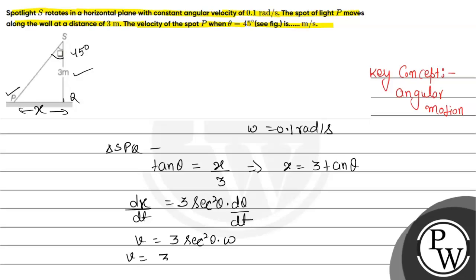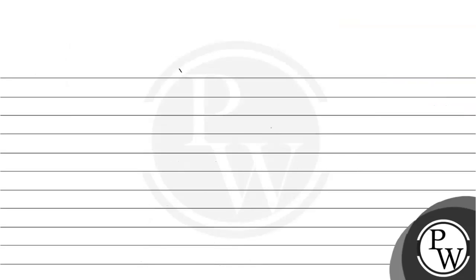If we find the value in this particular case, the value is theta equals 45 degrees. So it will be 3 sec squared 45 degrees into omega, which is 0.1 radian per second.